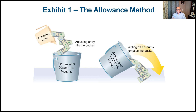You can think of the allowance for doubtful accounts as a bucket. The adjusting entry fills the bucket with our estimate, and then writing off the account empties the bucket. In reality you can't empty more than what's in the bucket, but in the allowance method this can happen — we might have $30,000 from our adjusting entry but end up writing off $32,000.